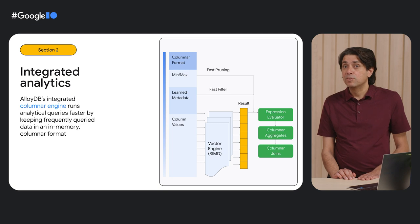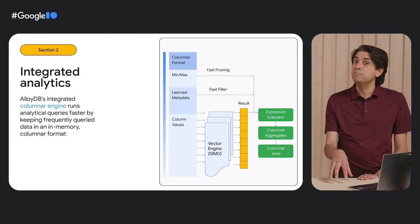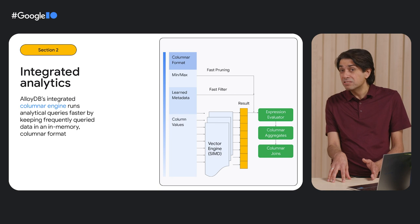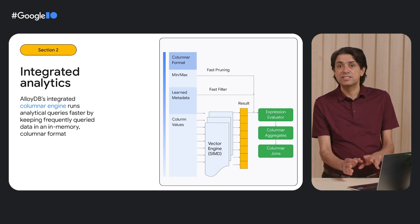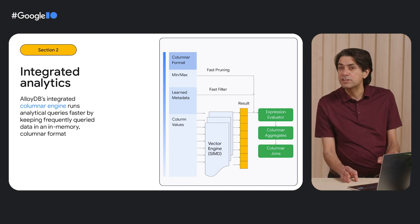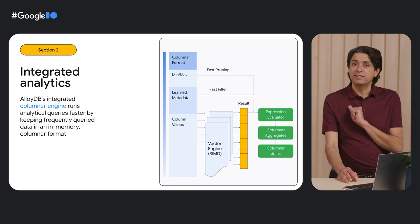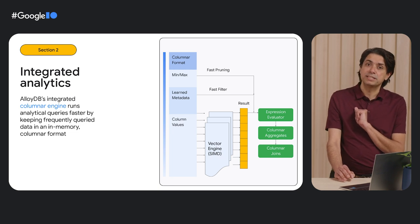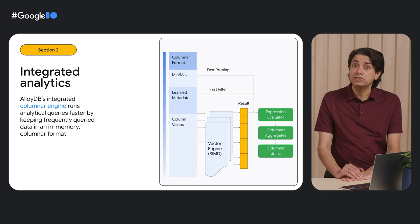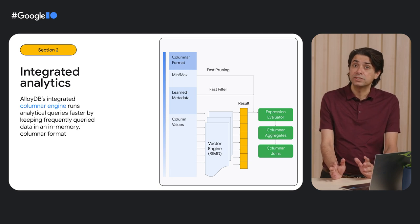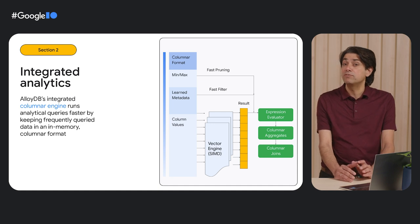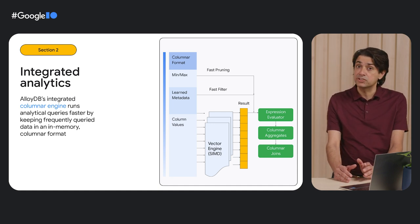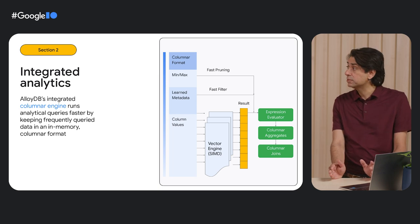Let's take this one step further. What about a world where you can run meaningful analytics — or one might say operational analytics — right against your transaction database? No streaming changes, no setting up pipelines, no federation of anything. With that in mind, we developed the columnar engine for our AlloyDB database. AlloyDB's columnar engine makes analytical queries run up to 100x faster by keeping frequently queried data in an in-memory columnar format for faster scans, joins, and aggregation. It's right there in the database for you to use.